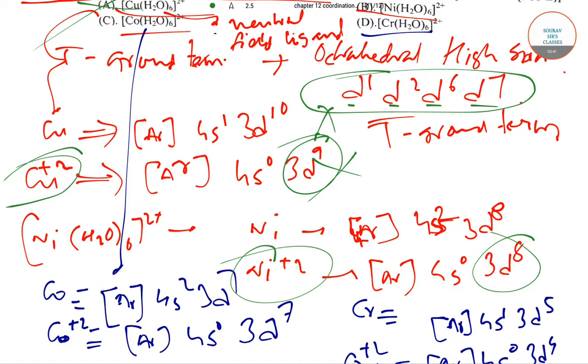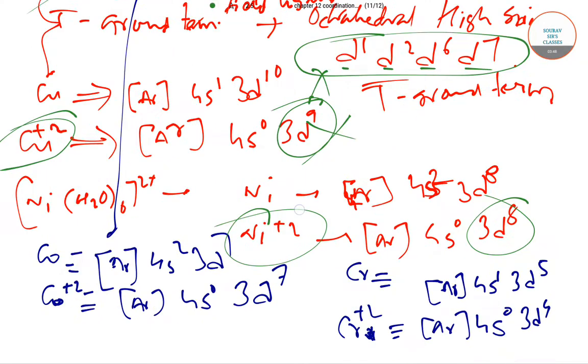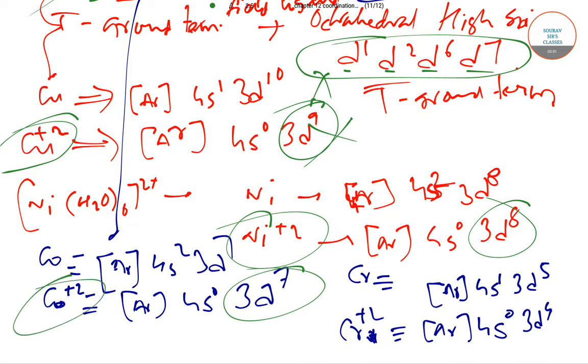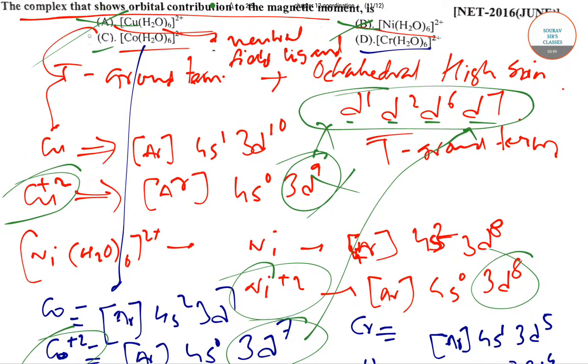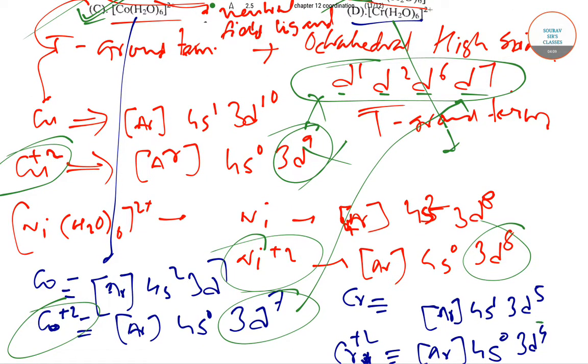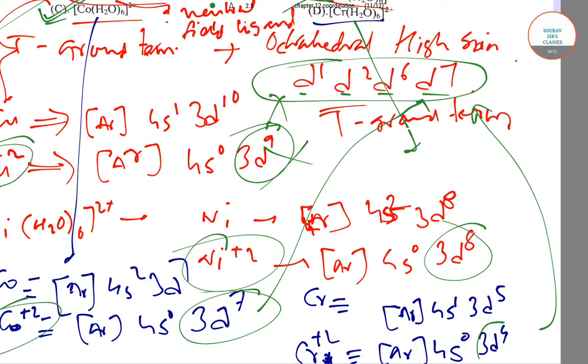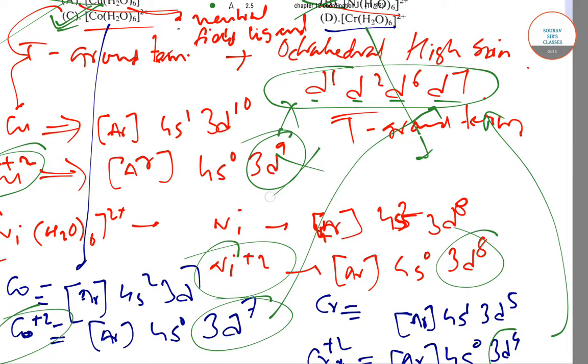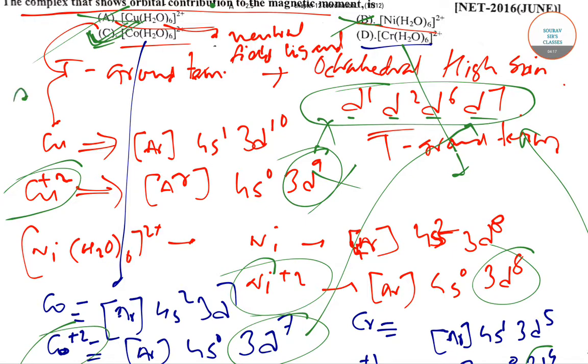So B successfully eliminated too. Then C, C has an electronic configuration of 3d7, Co+2, which is definitely the answer. And checking D, we have Cr+2 which has an electronic configuration of d4, which is not among these. So the only option is option number C. Hence the answer is C.